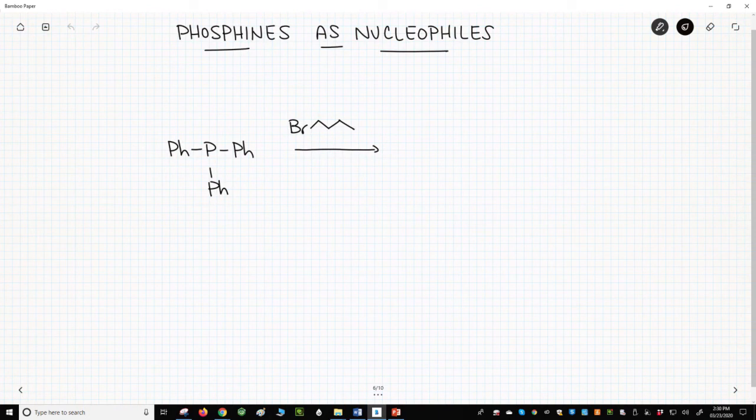When phosphorus has a lone pair, it is a good nucleophile. Remember that nitrogen, which is just above phosphorus on the periodic table, can do SN2 reactions on primary halides. Phosphorus, being a larger atom and more polarizable, is even more nucleophilic.